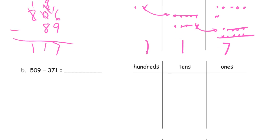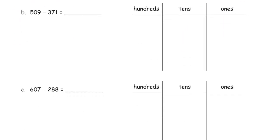509 minus 371. Well, I'm just going to do this vertically. Looking at our ones, we don't have to unbundle anything, so 9 minus 1, that's just 8. Sometimes it's like that. 0 minus 7 in our tens place—we can't do that, so we need to decompose a hundred. We'll get ten tens for that. 10 minus 7 is 3 tens left. 4 minus 3 is 1 left.